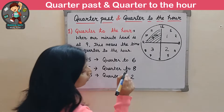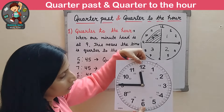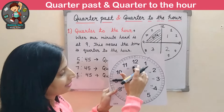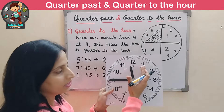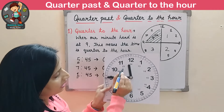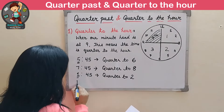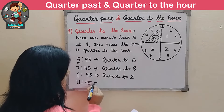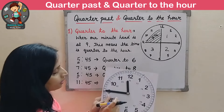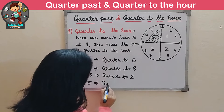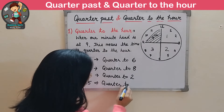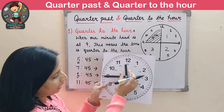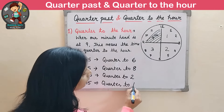One more example. The minute hand is at 9, and the hour hand is between 11 and 12, but it is almost at 12 — about to reach 12. The time will be 11:45. In words, we write quarter to 12, because the next hour is 12.